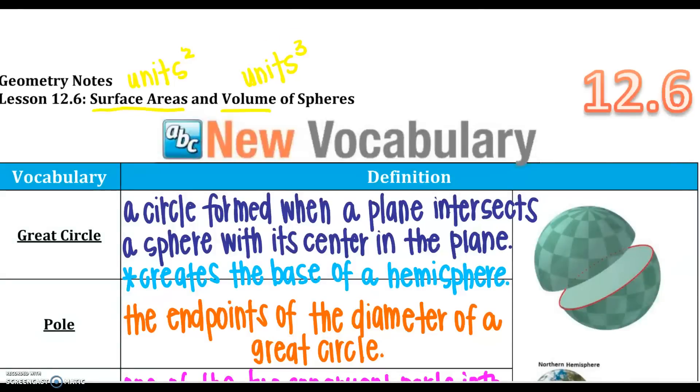So a little bit of vocabulary. We have this thing called the great circle, and it's a circle formed when a plane intersects a sphere with its center in the plane. So it creates the base of a hemisphere. So in section one, we talked about the cross section. So this is actually going through the center, and it is the great circle, the biggest circle that you could make if you intersect that sphere. So that also would be the base of a hemisphere.